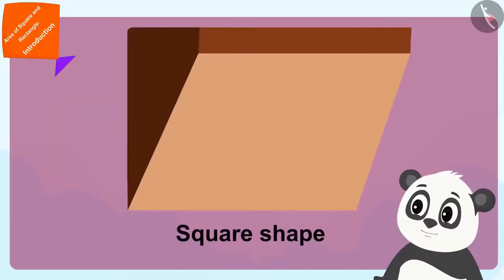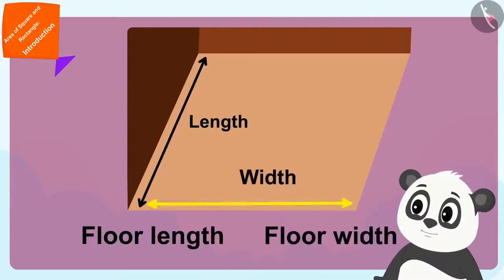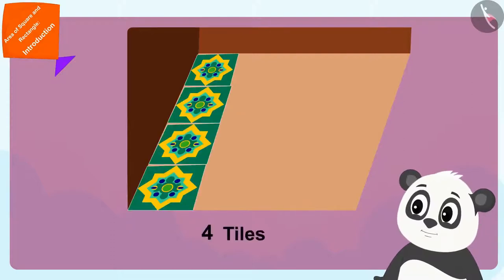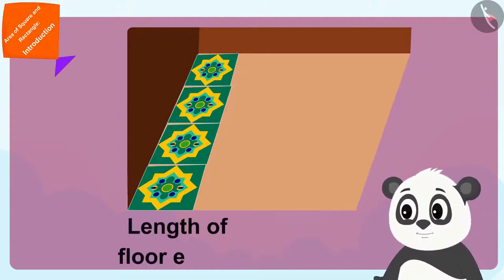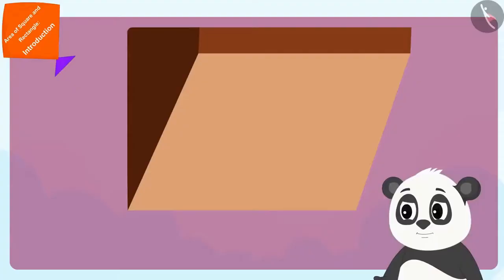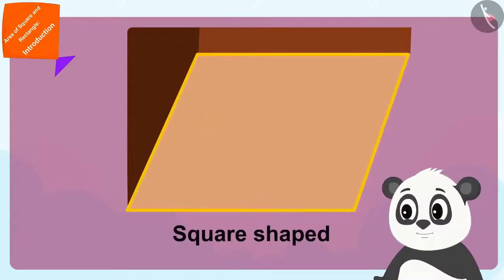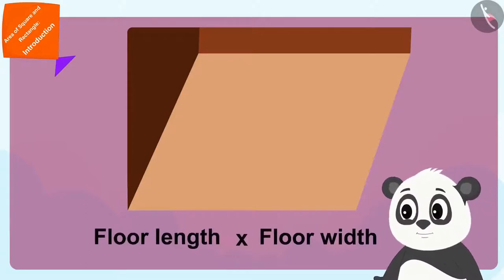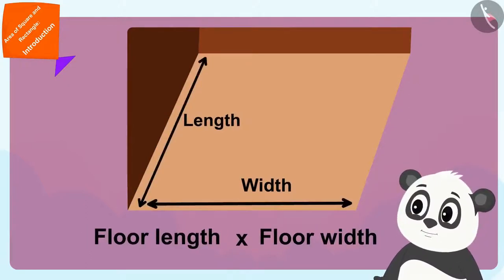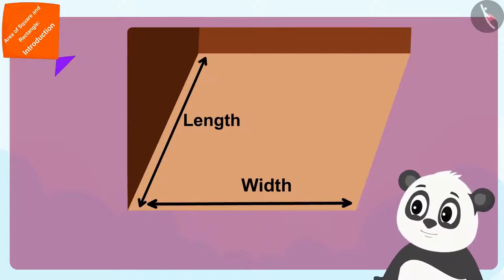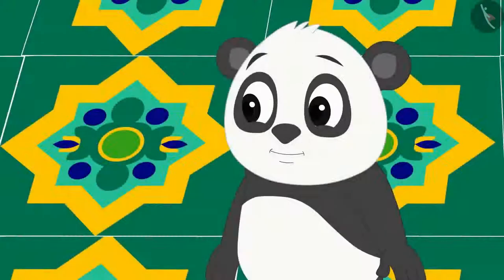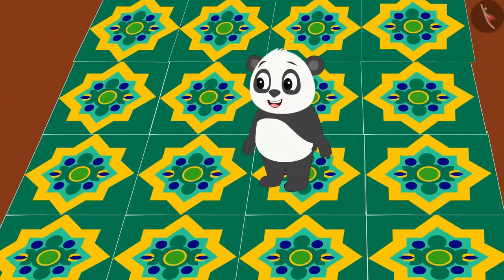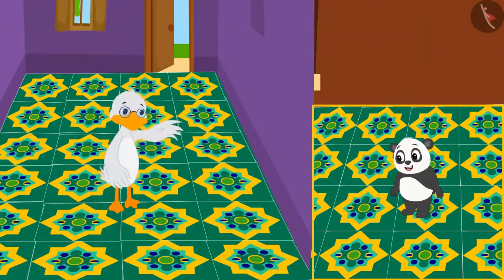Golu's floor is square shaped, so the length and width of his floor are exactly equal. He has laid 4 one-meter long tiles along the edge of his floor, which means the edge of his square shaped floor is 4 meters long. To find the number of tiles required, he only has to multiply the length of any two edges. Golu needs 4 times 4, or 16 tiles — in other words, Golu's square shaped floor has an area of 16 square meters. Golu covered his floor with those beautiful tiles.